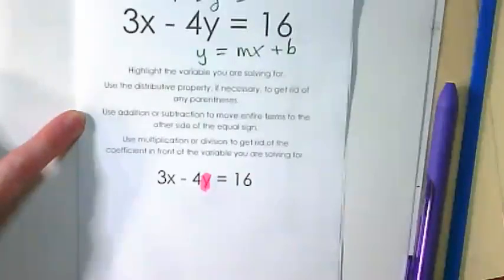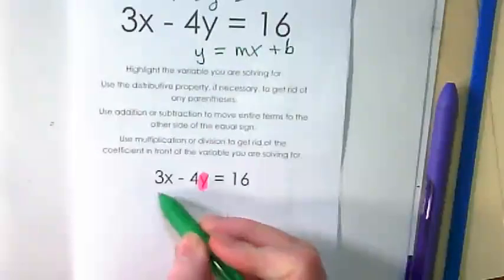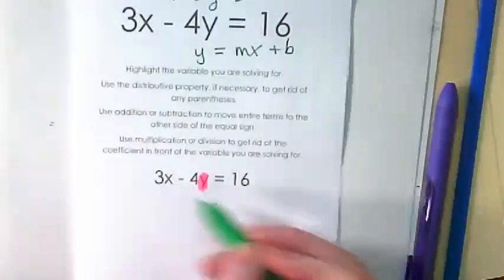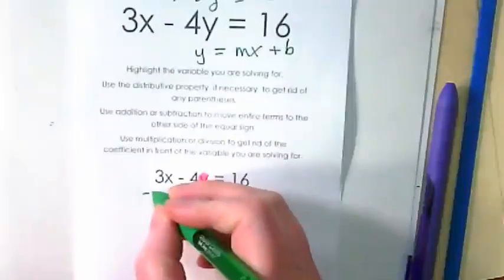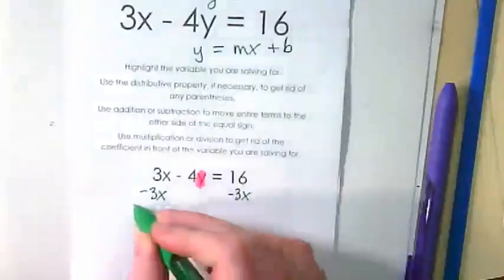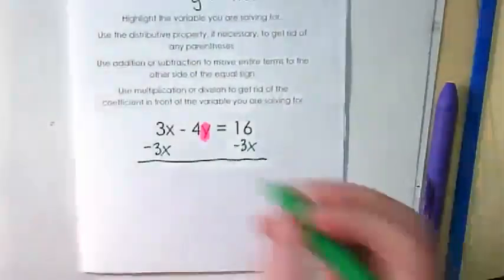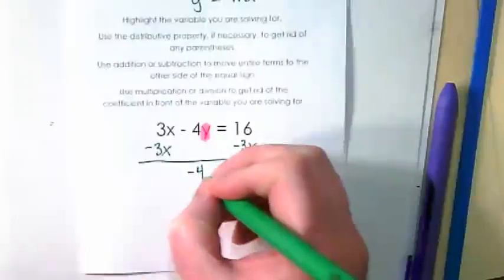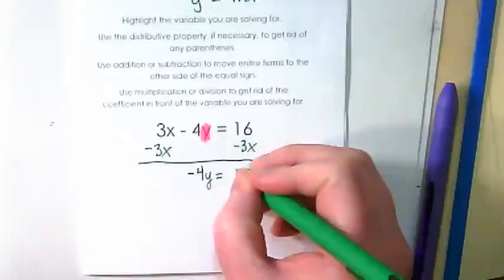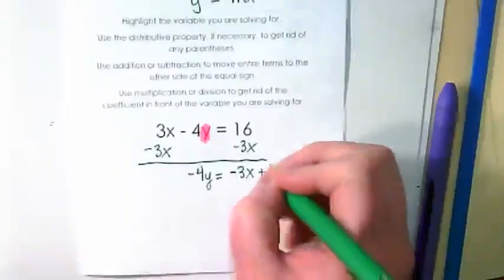Step three is to use addition or subtraction to move entire terms to the other side of the equal sign. We have this 3X that needs to move to the other side. It's a positive 3X and we're going to do the opposite and subtract it. And we end up with negative 4Y is equal to negative 3X plus 16.